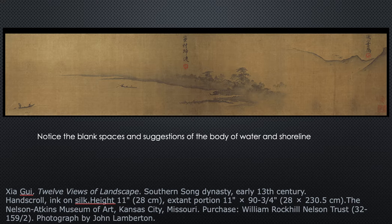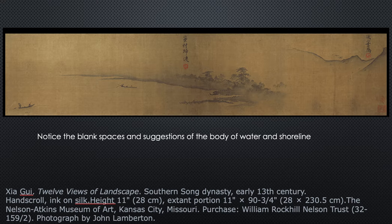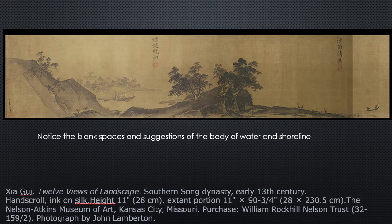Here's the next section of the same hand scroll, and that's the same little boat we saw last time. This portion is even less painted than the other — just a shoreline, a distant boat, and a distant ridge of mountains. He didn't need to show more; we get the idea. To me it's very beautiful. There's nothing particularly difficult to comprehend here — it's just very subtle and very beautiful.